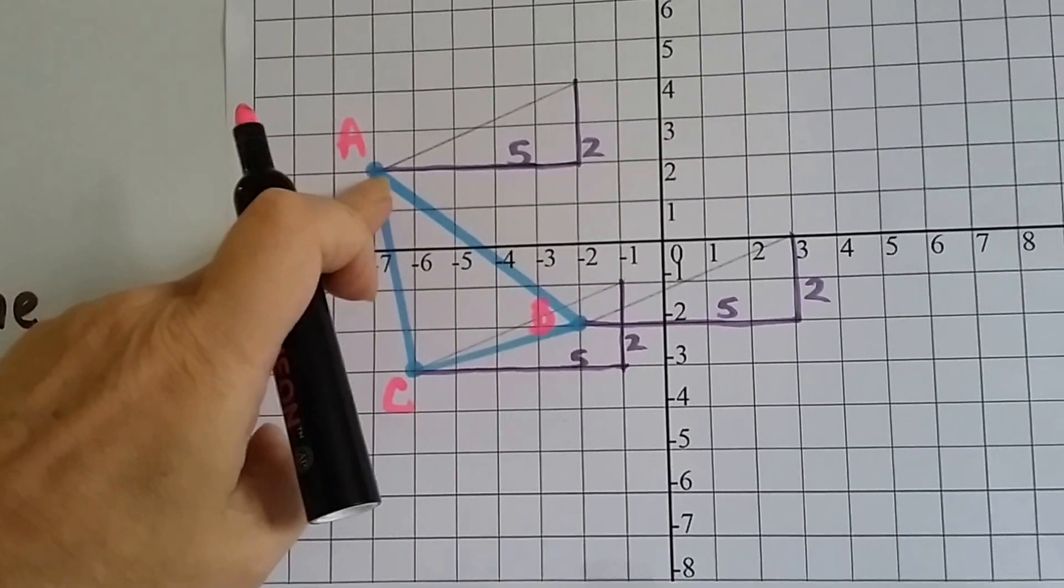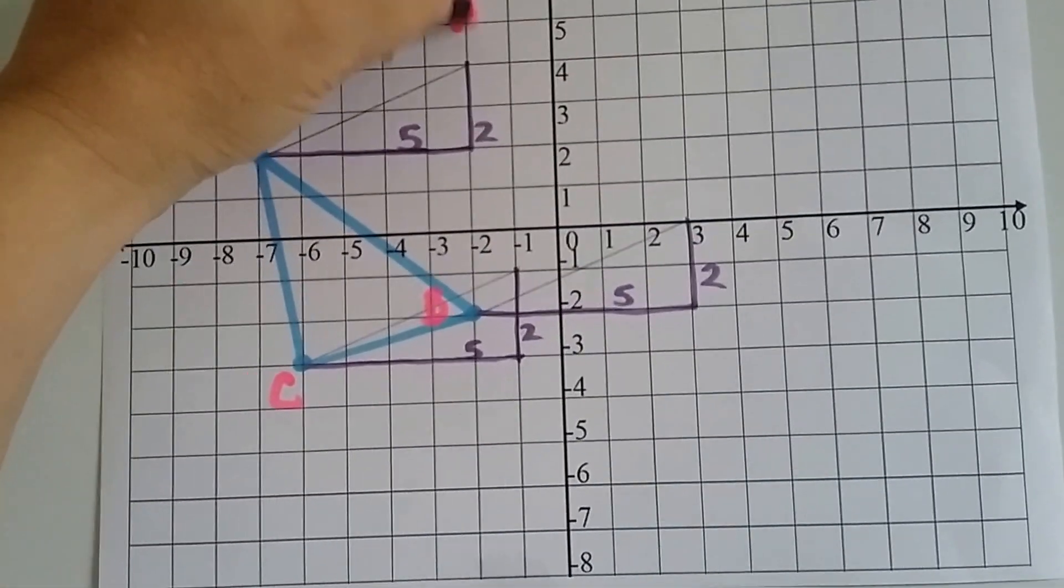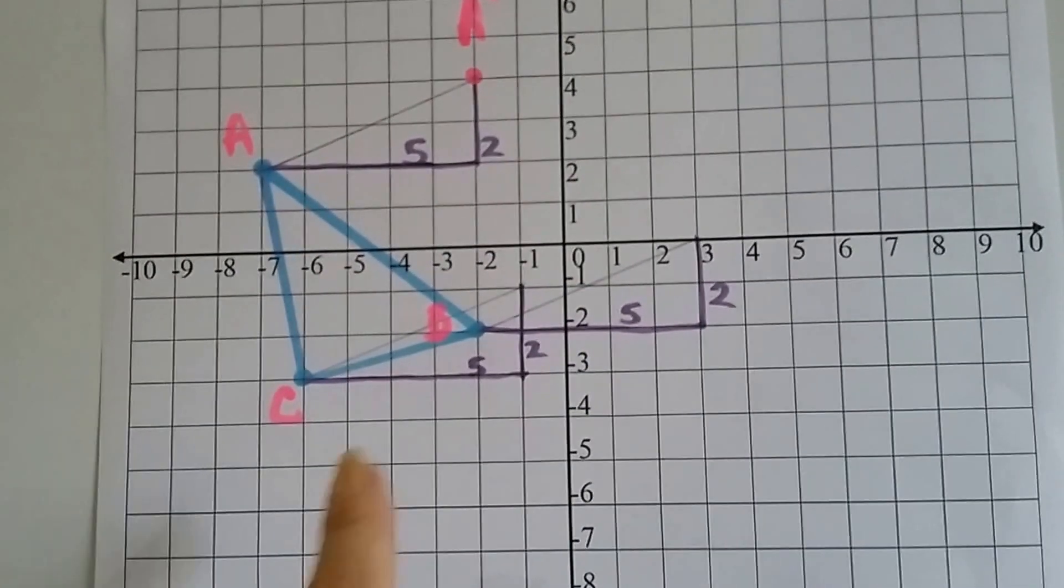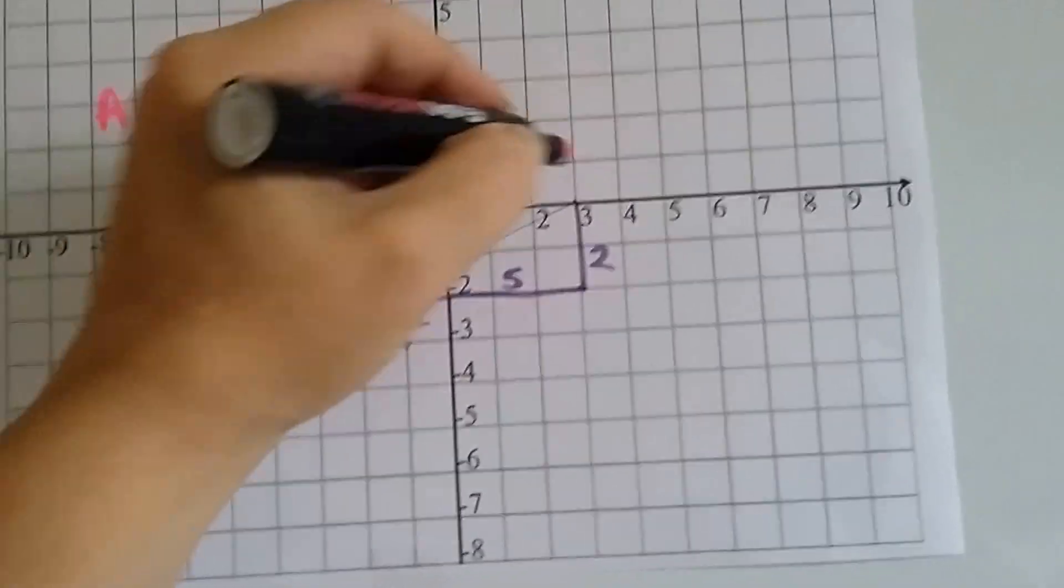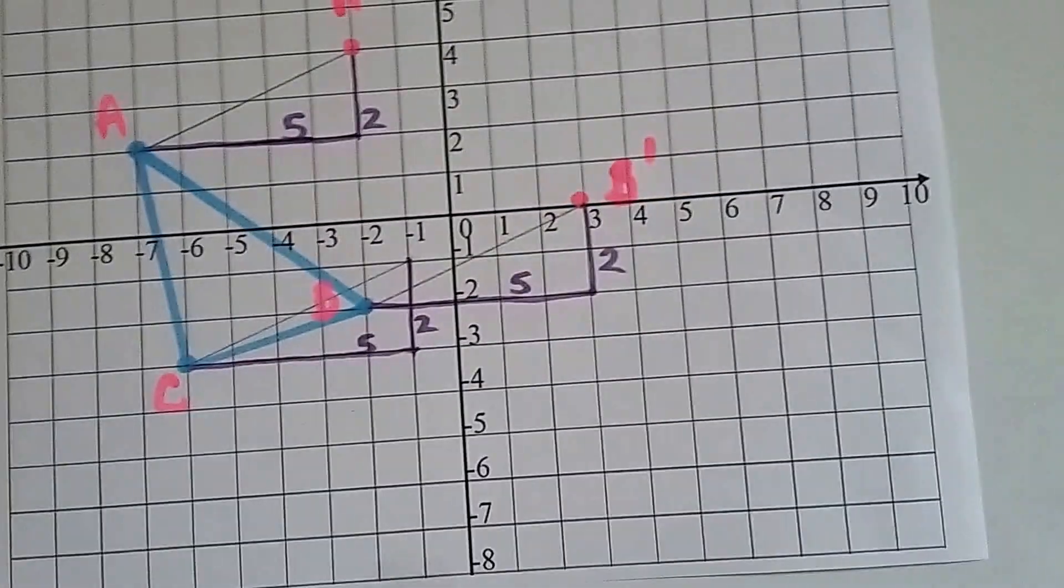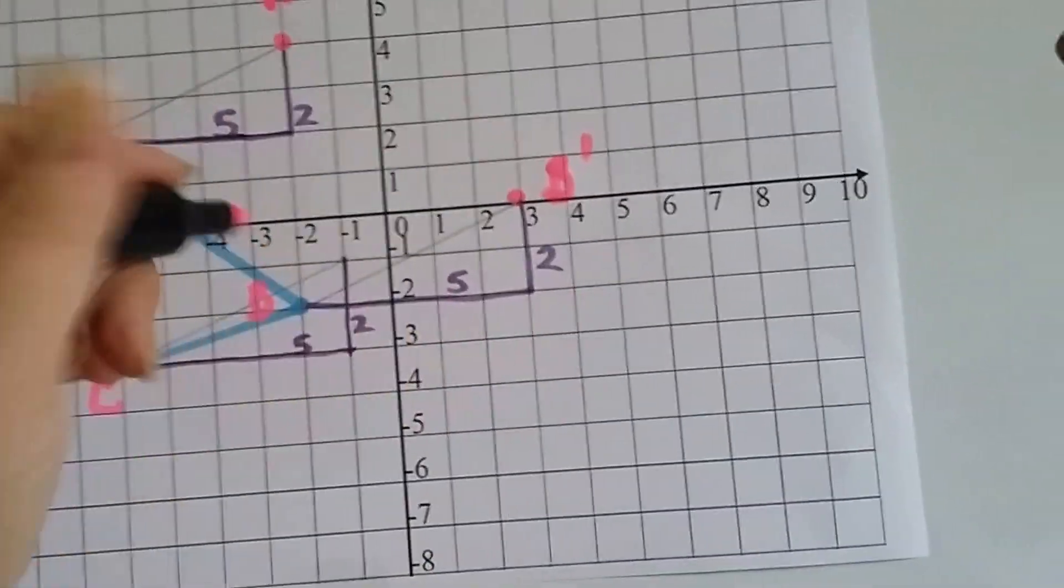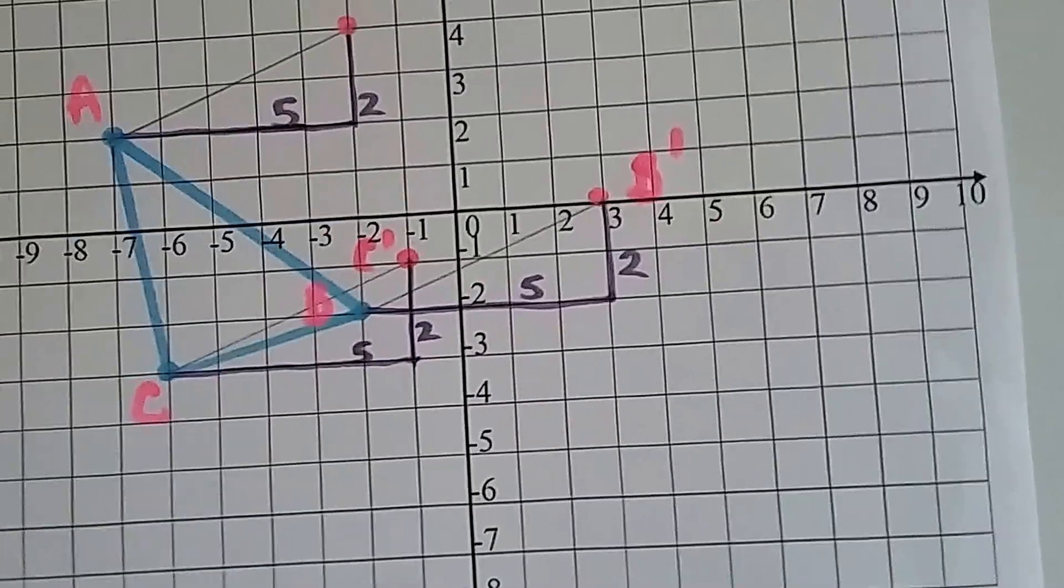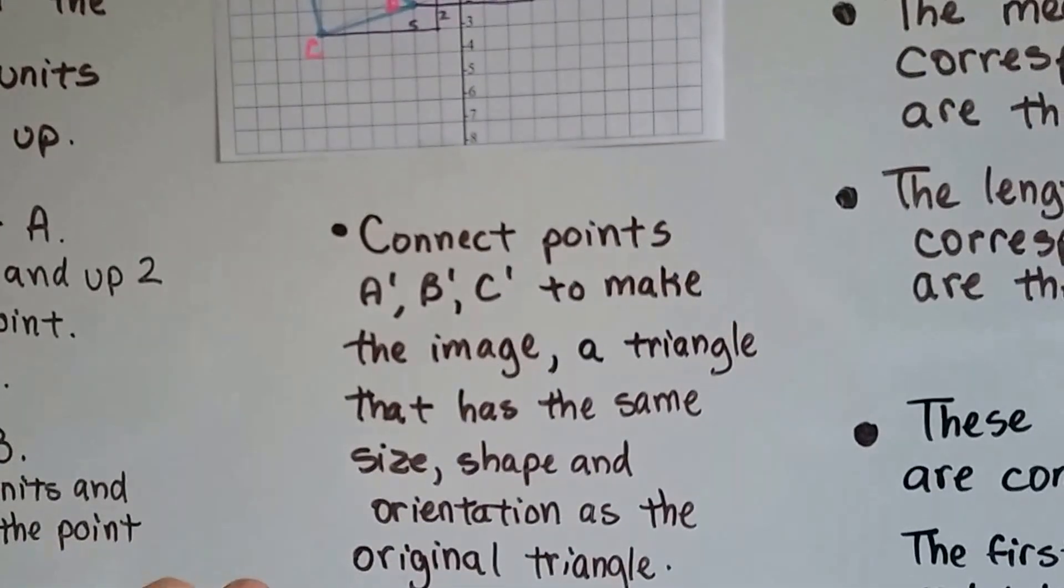If we go 5 units over to the right and 2 units up, that will give us A' right there. And for B, if we go 5 units over and 2 units up, that's going to give us B'. It's a B with a little tick mark. And for C, if we go 5 units over and 2 units up, that's going to give us C'.